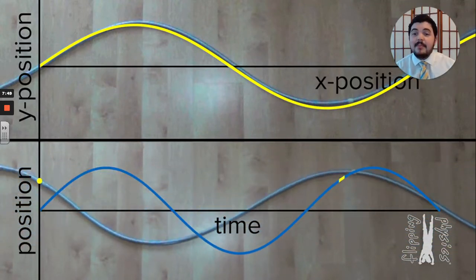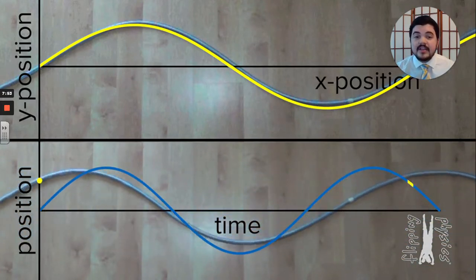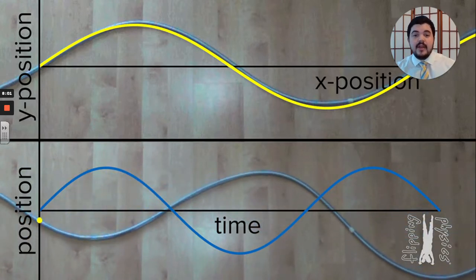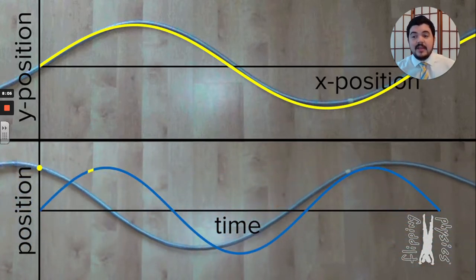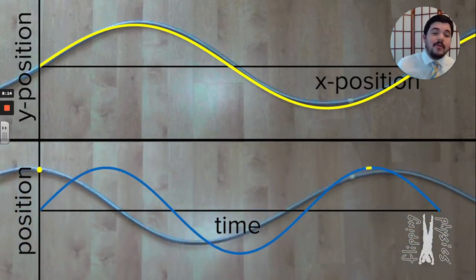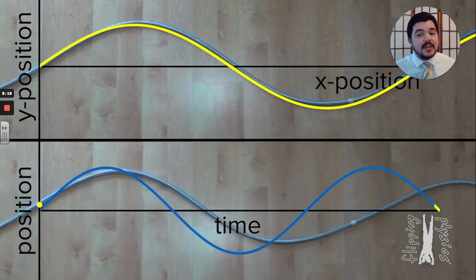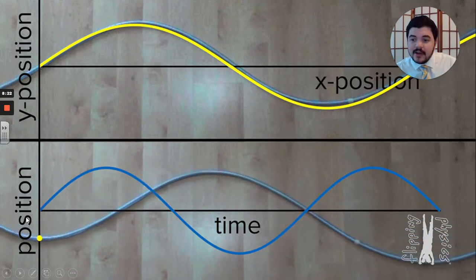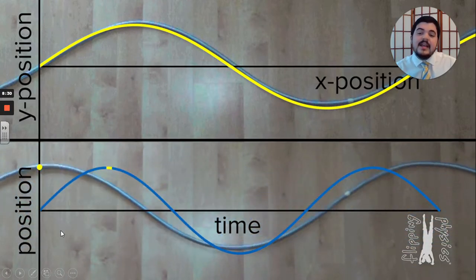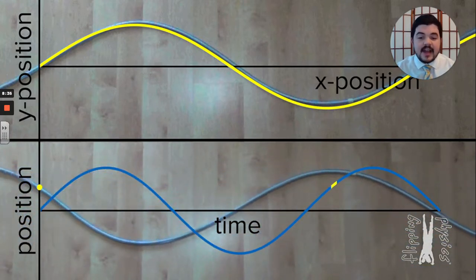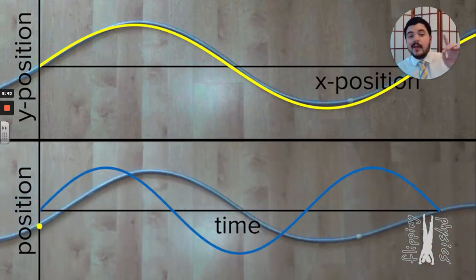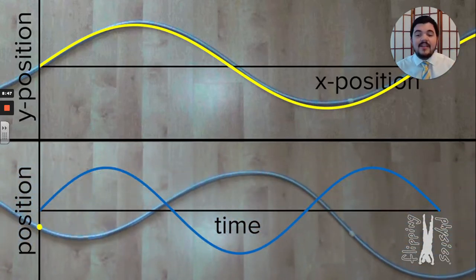Here we have two graphs showing what I mean. Both are slinky waves. The top graph shows the slinky wave as a function of x position — the yellow curve maps out the wave as a function of position, giving a single snapshot. For the bottom graph, we're only looking at the yellow dot, not every single point on the wave, and we're plotting how it evolves over time. You can see the yellow trace on the sine curve matching out that oscillation.